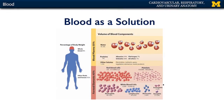Let's talk about blood. Blood is a solution that comprises approximately 8% of our body's mass. As a solution, blood has two major constituents. There's the blood plasma, which is about 55% of the total mass of the solution.